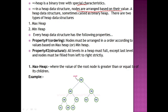Generally we have two types of heaps. The first one is max heap and the second one is min heap. In a max heap, the parent value is greater than its children. In a min heap, the parent value is lesser than its children.